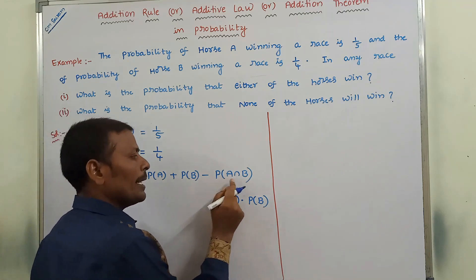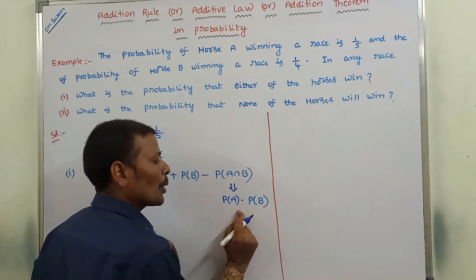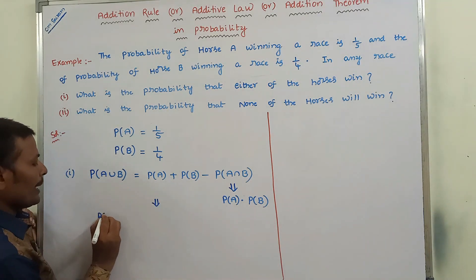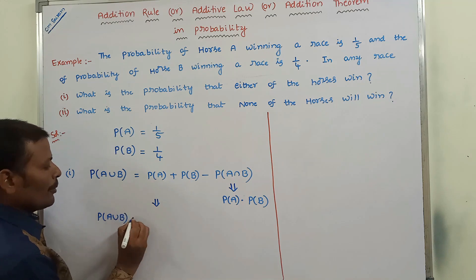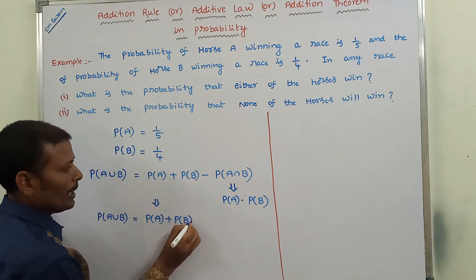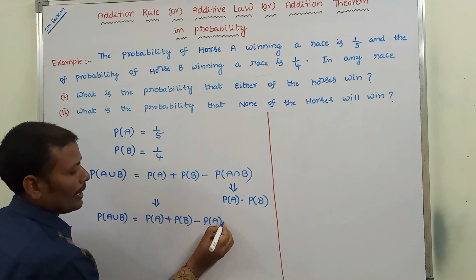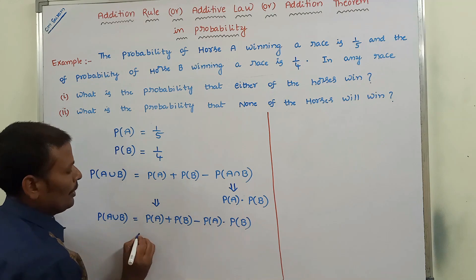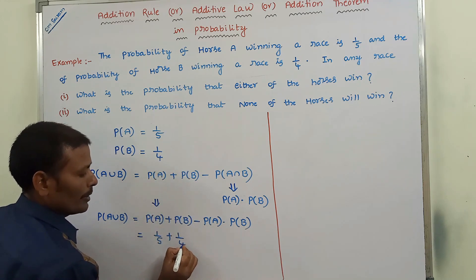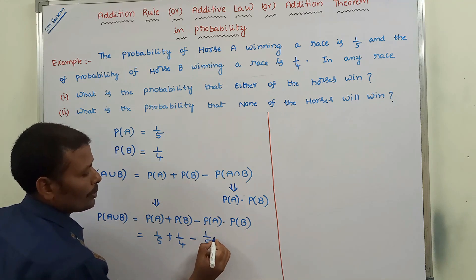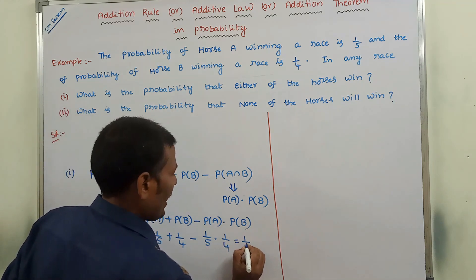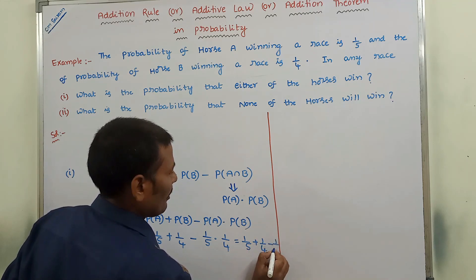So the formula becomes: P(A ∪ B) = P(A) + P(B) − P(A) × P(B). P(A) is 1/5, P(B) is 1/4, so we subtract P(A) × P(B), which is 1/5 × 1/4.